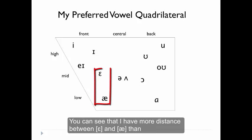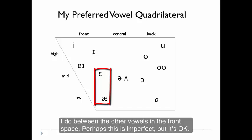You can see that I have more distance between [ɛ] and [æ] than I do between the other vowels in the front space. Perhaps this is imperfect, but it's okay.